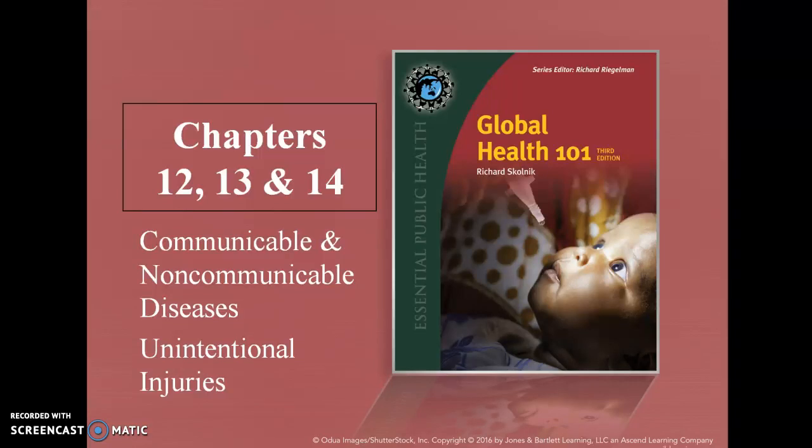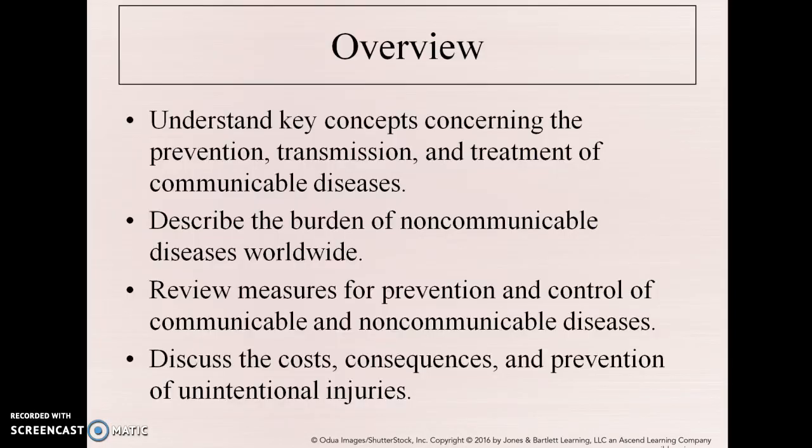This is a talk on chapters 12, 13, and 14 in Global Health 101 by Richard Skolnick. We're going to talk about communicable and non-communicable diseases and unintentional injuries.